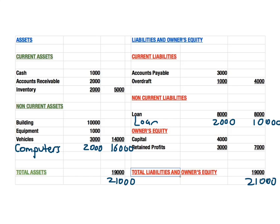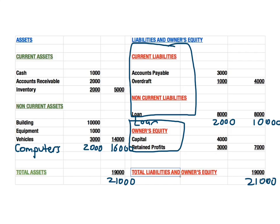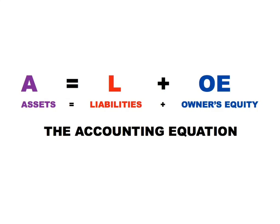So every time a business buys an asset, it must pay for it either with money from outside the business — liabilities — or money inside the business — owner's equity. Therefore, the balance sheet will always be in balance, because of the accounting equation: assets equals liabilities plus owner's equity.